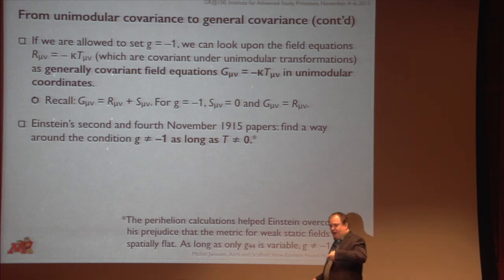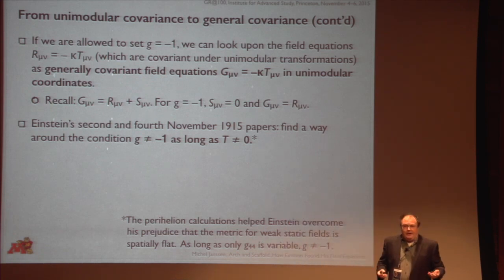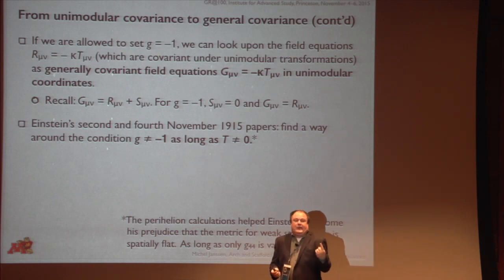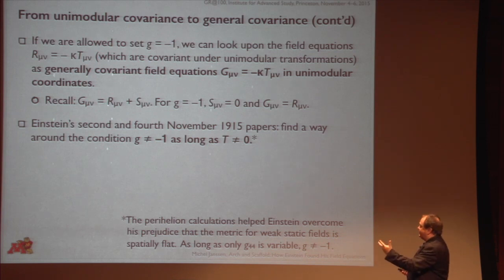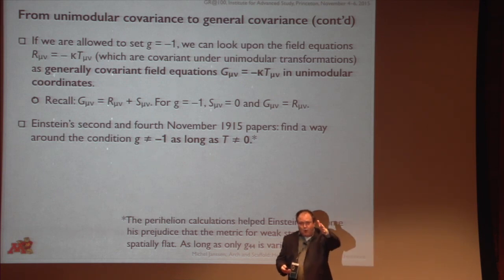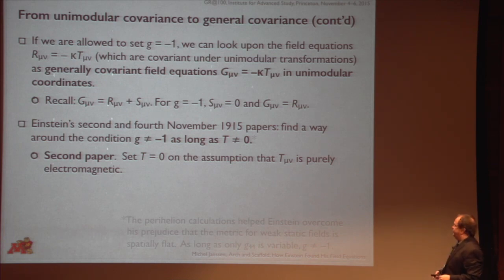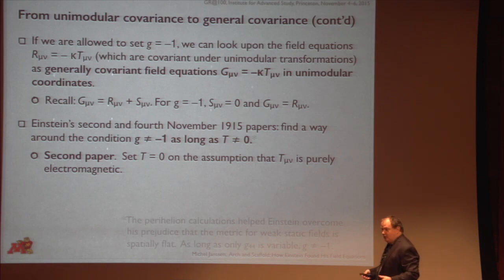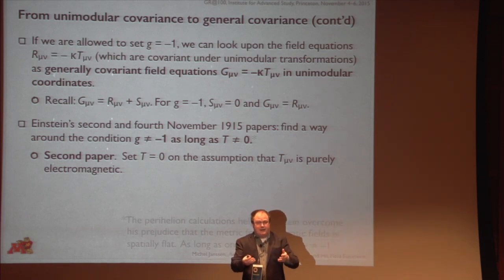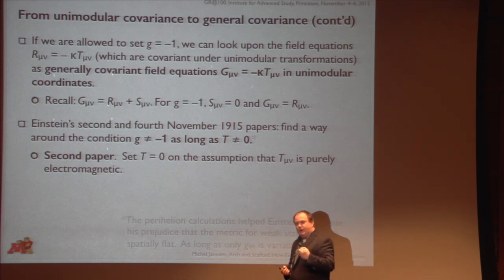At the same time, the perihelion calculations convince Einstein over another hurdle: he had this prejudice that the metric for a weak static field should be spatially flat, meaning there's only one variable component, namely G₀₀. Clearly, as long as there's only one variable component, you cannot have the determinant equal to one. He gets rid of that prejudice in the course of the perihelion calculation: he realizes there can be all sorts of other components that are not constants, because those components do not enter into the equations of motion for Mercury. So what does he do? The second paper is very crude — the first thing you would think is: well, as long as T equals zero, set T equal to zero. You cook up some argument: matter is going to be all electromagnetism, and for standard electromagnetism the trace equals zero — even though we may need to go to something more general than Maxwell's equations, let us assume it remains zero. He is not very happy about this for very long.